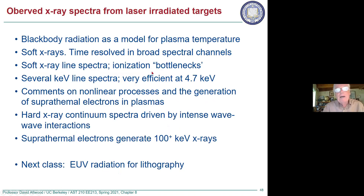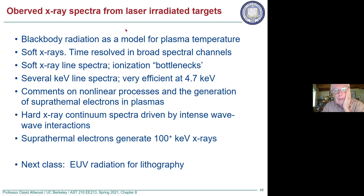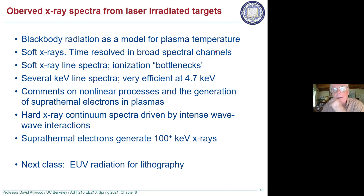Now some things about x-rays and observed x-ray spectra for different targets. Black body radiation gives a quick estimate of what kind of plasma temperatures you'll have. It's amazing how much you can get from those two simple formulas for black body radiation. For soft x-rays, people use time-resolved measurements in broad channels. For astronomy this is quite common, but even for laser-produced plasmas it is also a common thing.